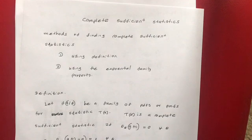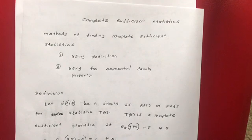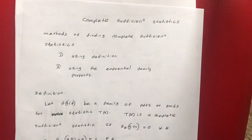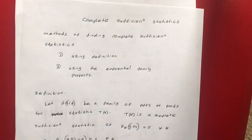There are some situations, like if your random variable belongs to a uniform distribution between 0 and parameter theta, that will not be an exponential family distribution. In that case you have to use the definition of the complete sufficient statistic.